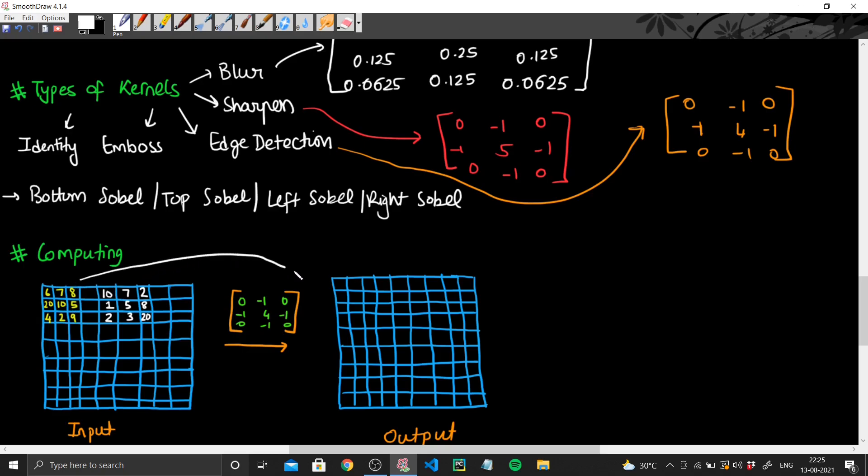So if we simplify that here, we get 6 times 0 (6 is the value of the pixel there multiplied with the kernel value at that place, is 0), and then you keep adding. So this is plus 7 times minus 1, plus 8 times 0, plus 20 times minus 1, plus 10 times 4, plus 5 times minus 1, plus 4 times 0, plus 2 times minus 1, plus 9 times 0.